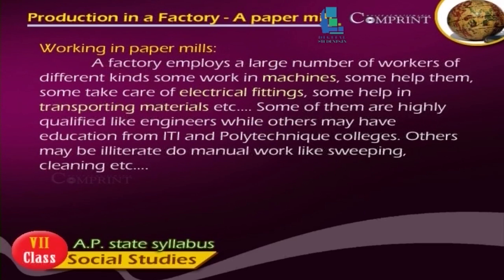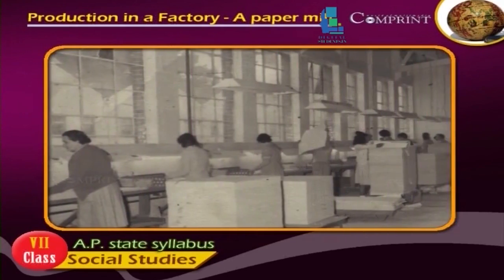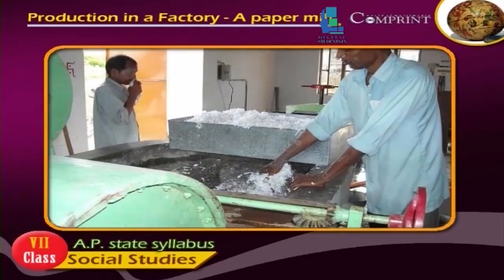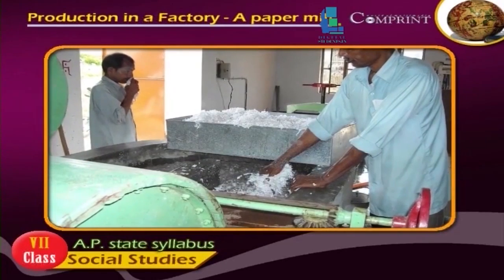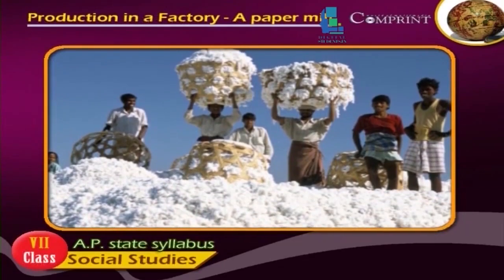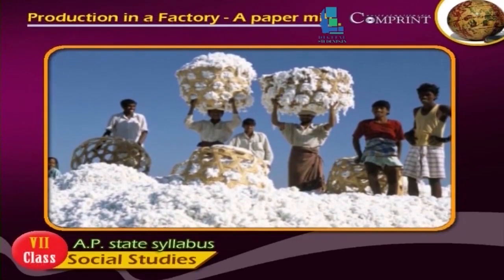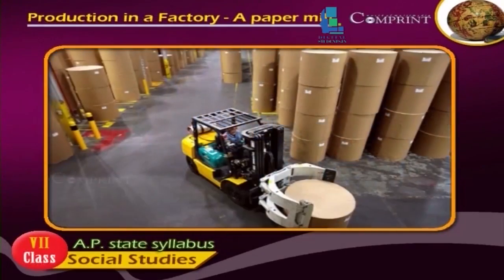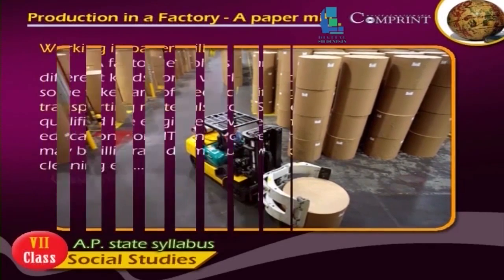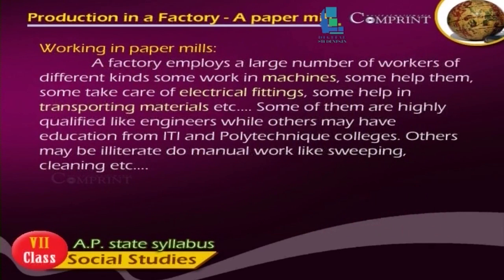Working in paper mills: A factory employs a large number of workers of different kinds. Some work on machines, some help them, some take care of electrical fittings, some help in transporting materials, etc. Some of them are highly qualified, like engineers, while others may have been educated from ITI and Polytechnic colleges. Others may be illiterate.